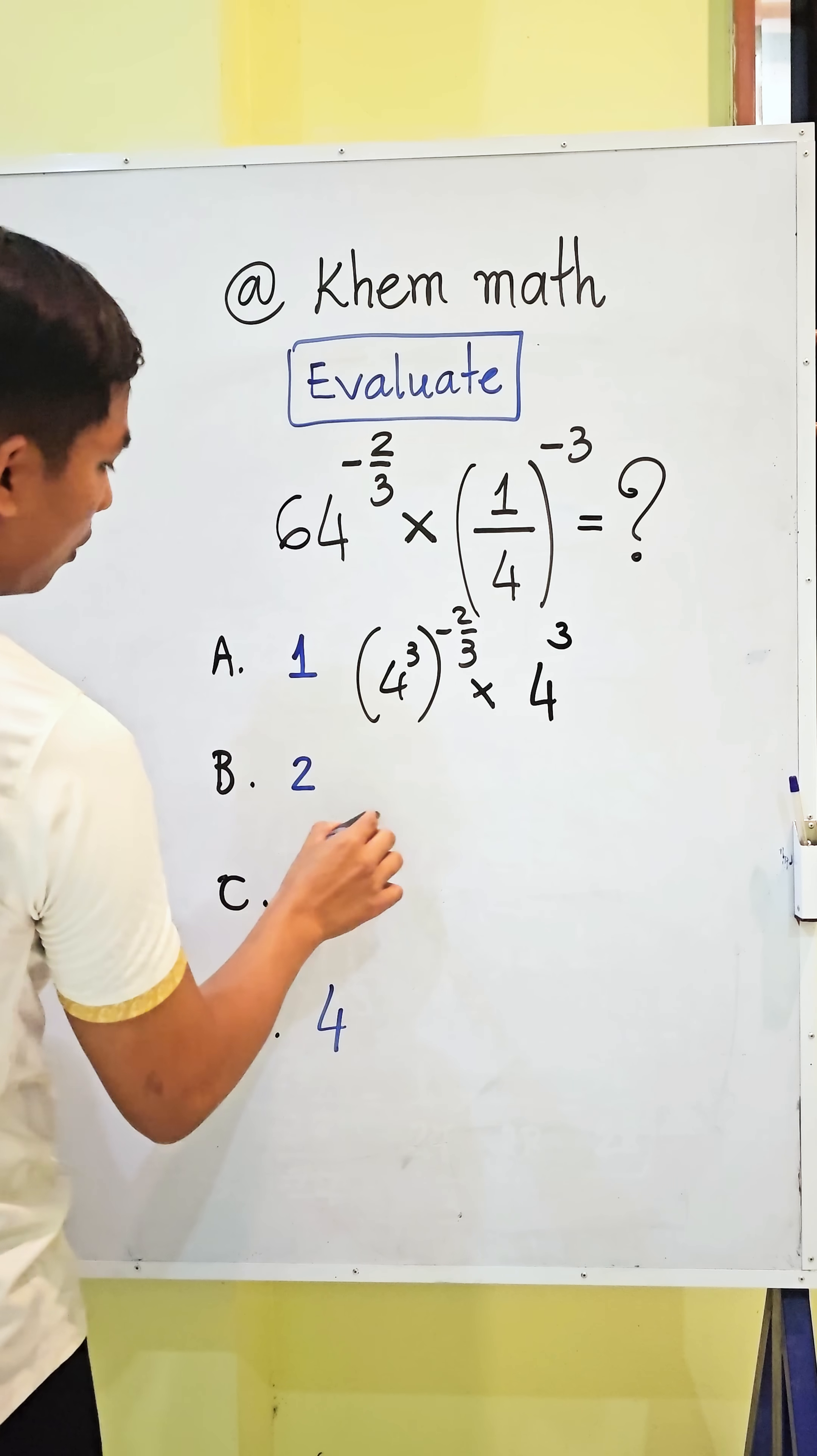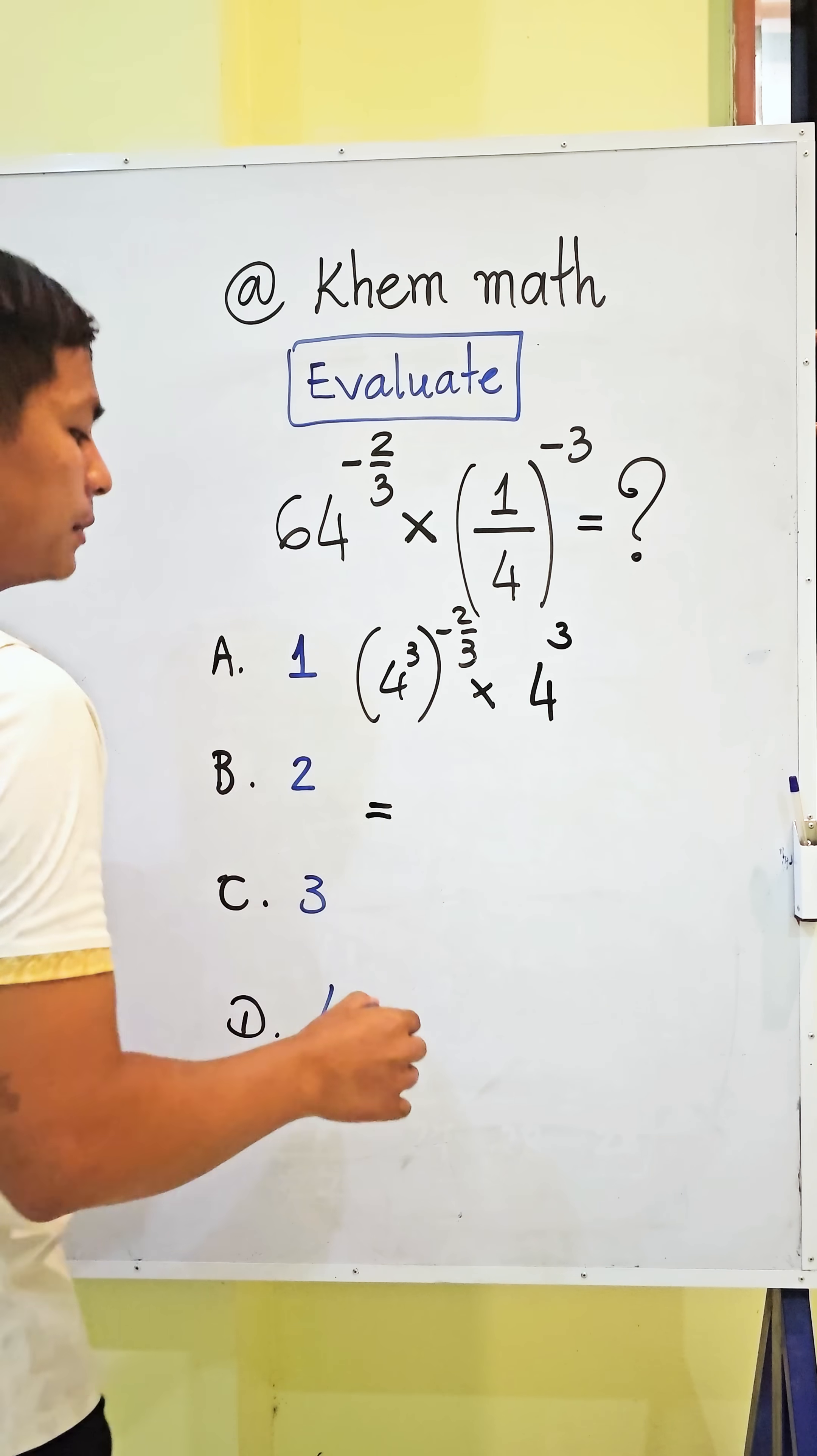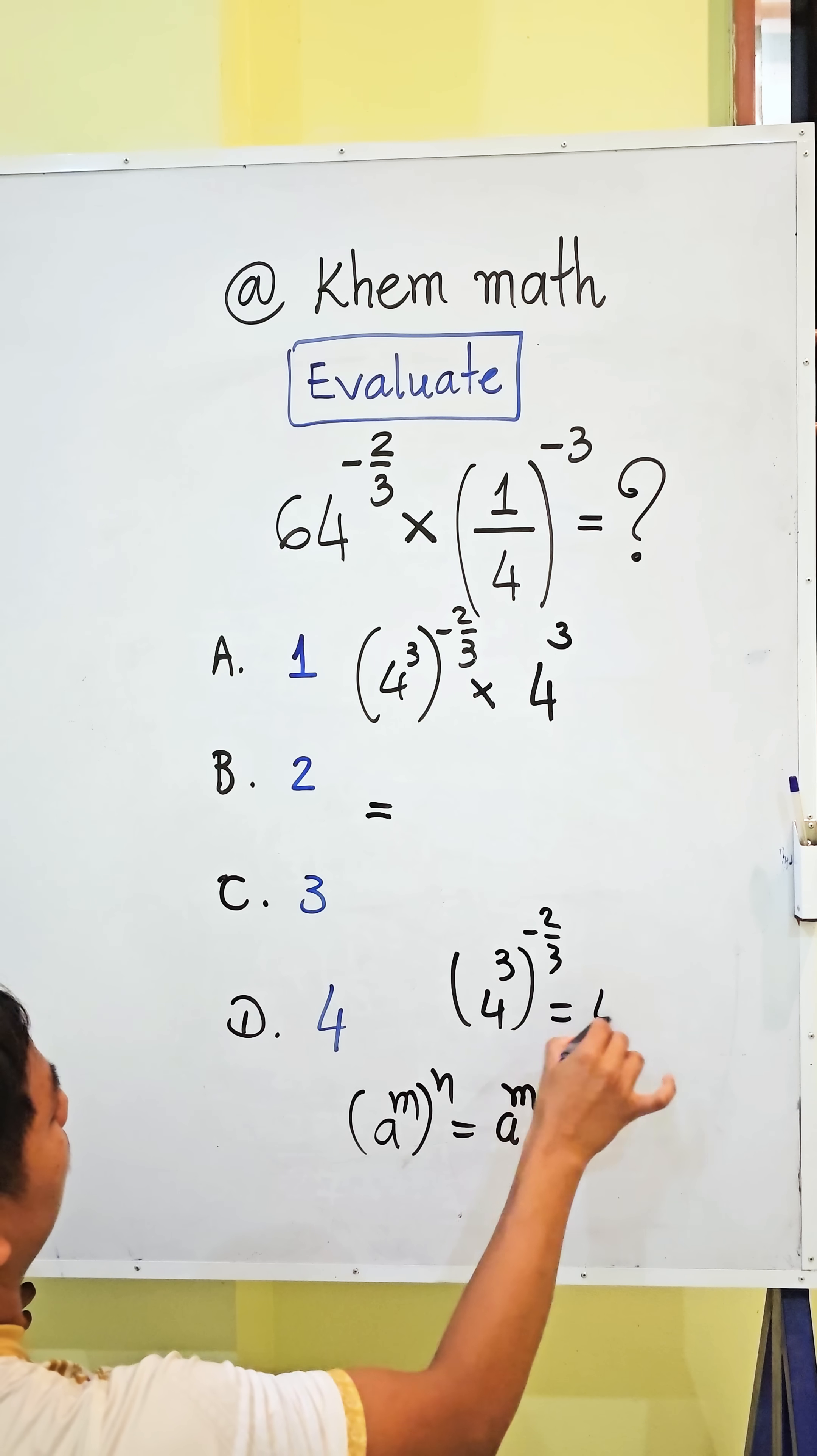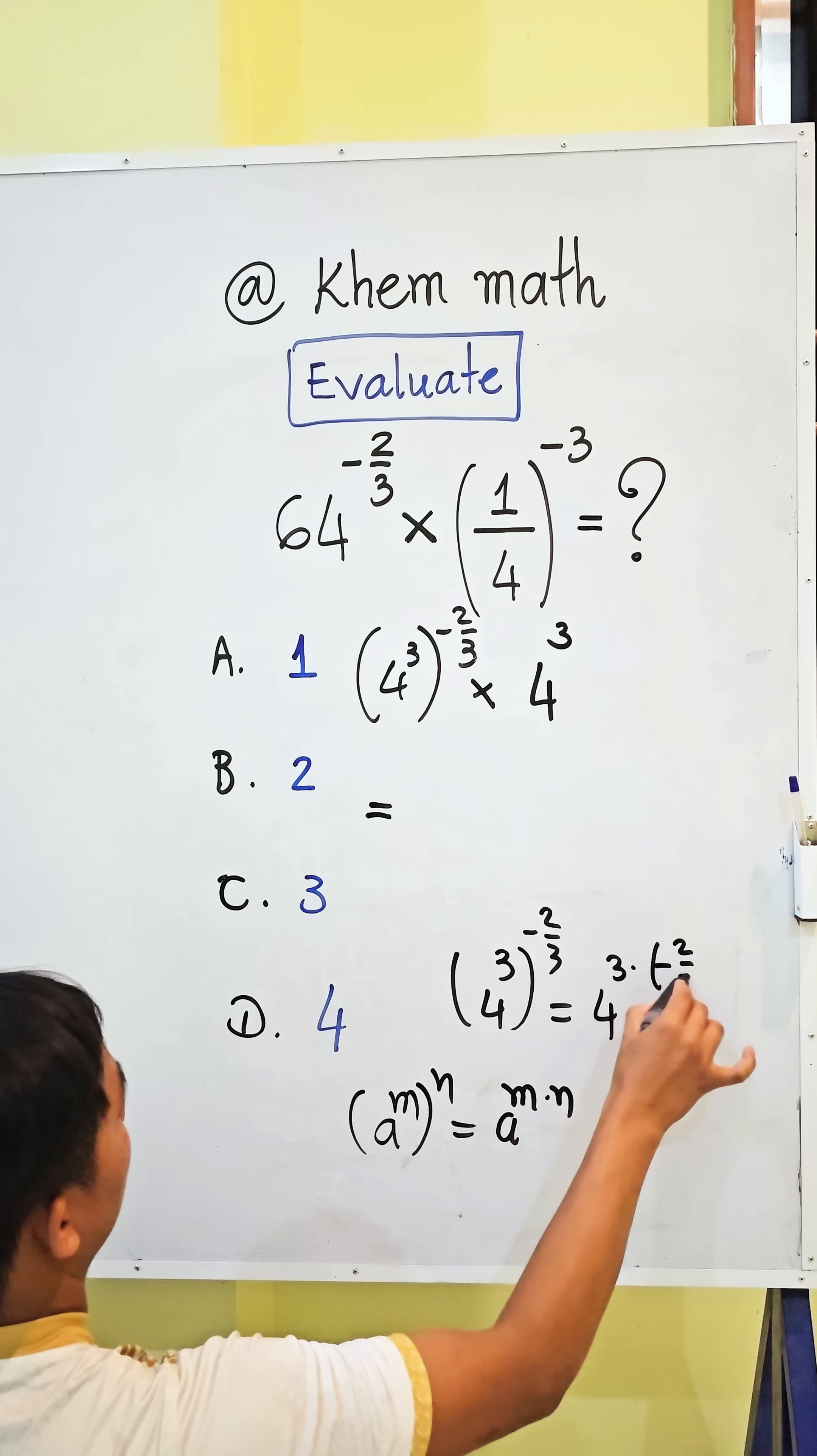And equal, here we can simplify 3 with 3. Because A power M all power N equals A power M times N. So here 4 power 3 all power negative 2 divided by 3 equals 4 power 3 times negative 2 divided by 3.